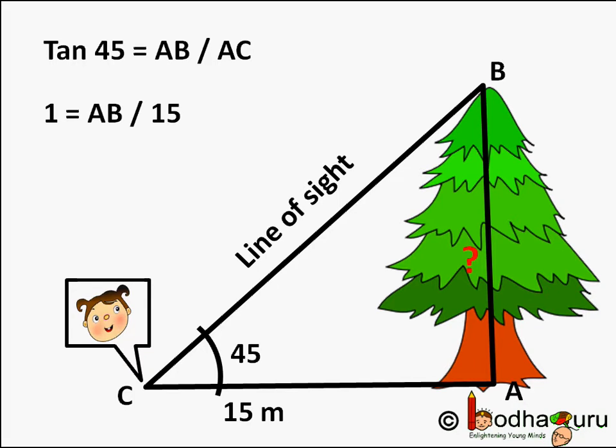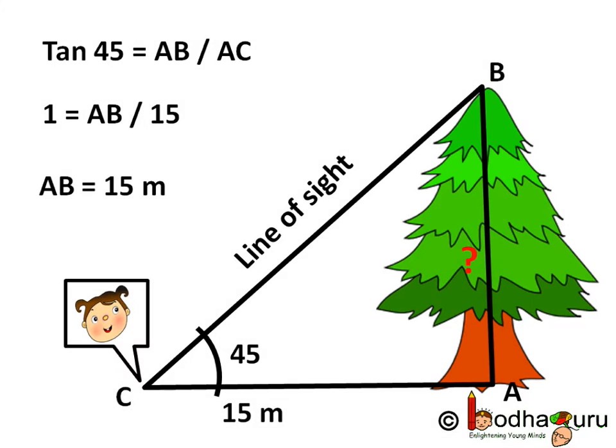We know tan 45 is 1, and AC equals 15 meters. So 1 equals AB by 15, which makes AB equal to 15 meters. So the height of the tree is 15 meters.